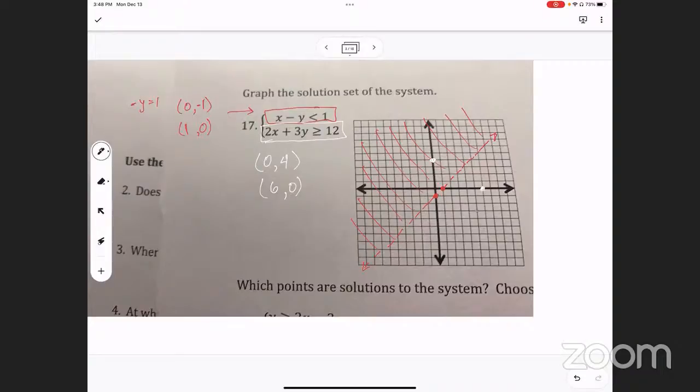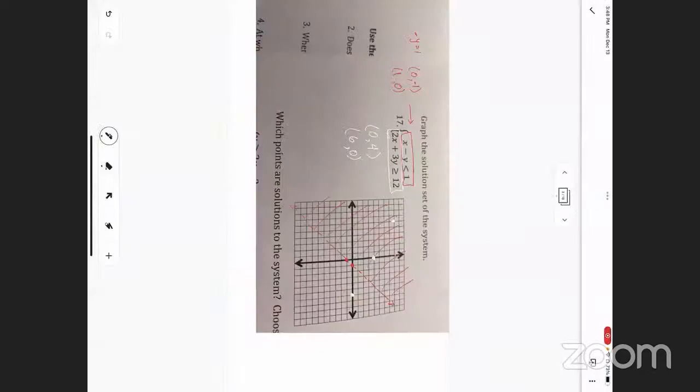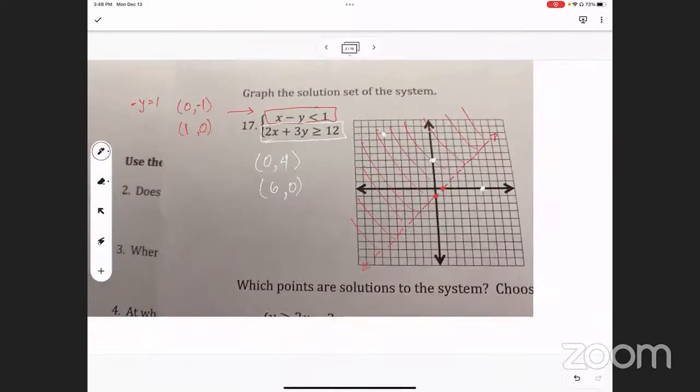And when I graph that, the slope is negative two thirds, right? So if I go down four and over six, or up four and left six, it's sometimes good to put an extra dot down there. I'm trying to draw this line as good as possible. I notice this is going to be a solid line, right?